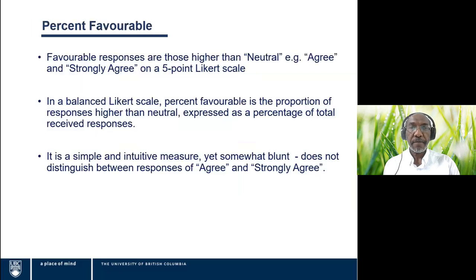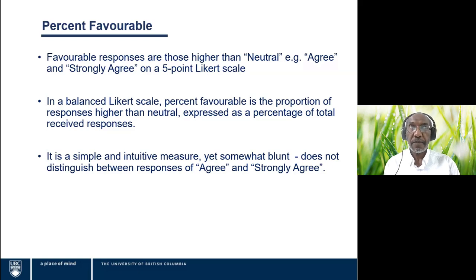Percent favorable is a simple, intuitive measure. We take the number of responses that are favorable — on the five-point scale, that would be agree and strongly agree — and express that as a percentage of the total received responses. It is intuitive, but somewhat blunt because it does not distinguish between responses of agree and strongly agree on the five-point scale. Both are just favorable; one and two are unfavorable and three is neutral.